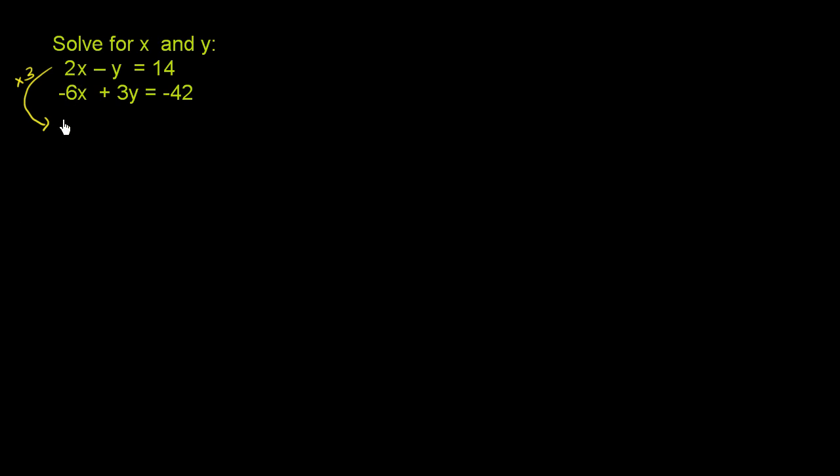So I multiply 2x by 3, I get 6x. I multiply negative y by 3, I get negative 3y. And then I multiply 14 by 3. 3 times 14 is 42, right? 3 times 10 is 30 plus 12, it's 42.